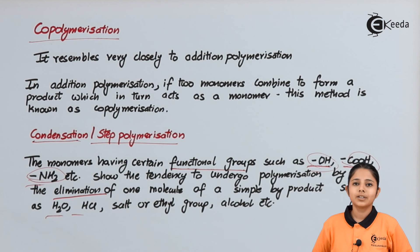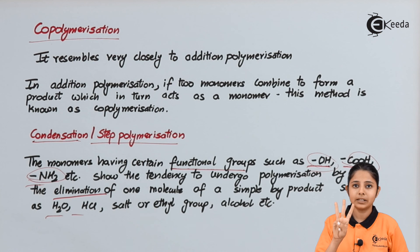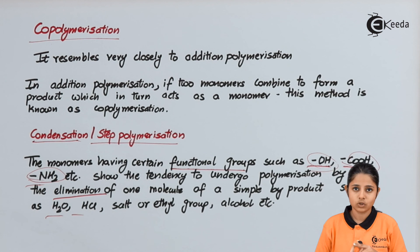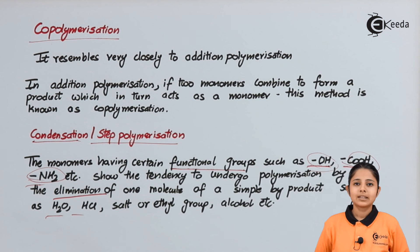In today's session we studied about polymerization and the different types of polymerization. There are three main types: the first is addition polymerization, the second is copolymerization, and the third is condensation polymerization. All three are different techniques and methods to make polymers. Thank you so much for watching this video.